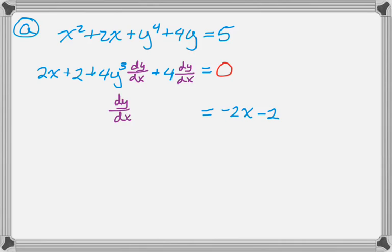I'm going to factor dy/dx out of everything on the left side, which leaves me with dy/dx times the quantity 4y cubed plus 4, then divide through by that.